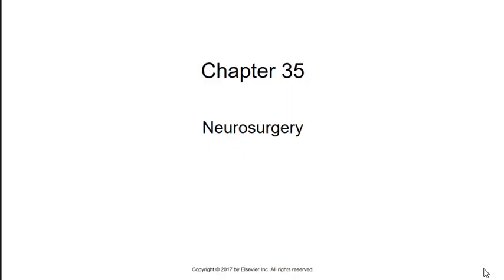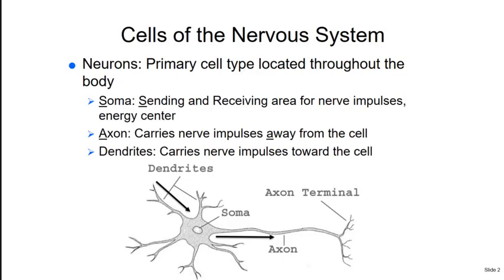Welcome to chapter 35: neurosurgery. Neurosurgery is a specialization of the brain, spine, and peripheral nerves. The neuron is the primary cell type of the nervous system and is located throughout the body. The neuron has three main parts: the soma, which acts as the sending and receiving area for nerve impulses and is also the energy center for the cell; the axon, which carries nerve impulses away from the cell; and the dendrites, which carry nerve impulses toward the cell.